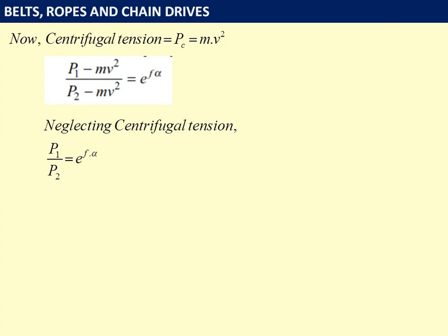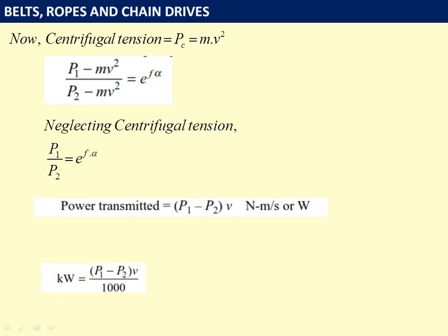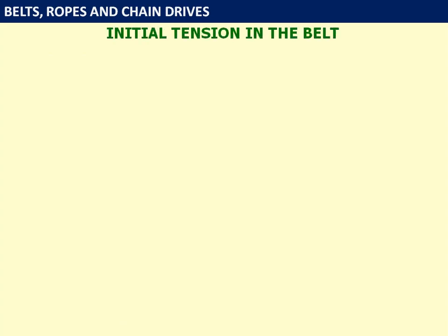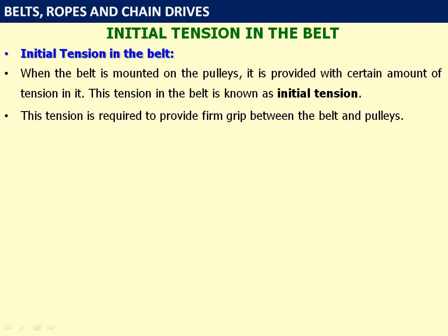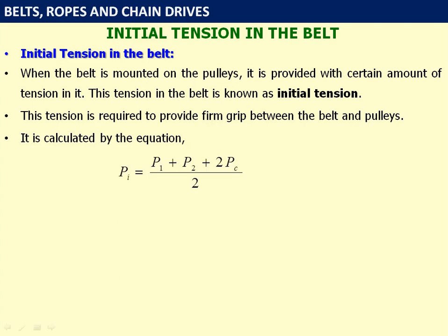Power transmitted equals (P1 − P2) × v in watts, or (P1 − P2) × v / 1000 in kilowatts. Initial tension in the belt is a very important concept. When the belt is mounted on the pulley, it is provided with a certain amount of tension known as initial tension. This tension provides a firm grip between the belt and the pulley. Initial tension Pi = (P1 + P2 + 2Pc) / 2, where Pc is the centrifugal tension.